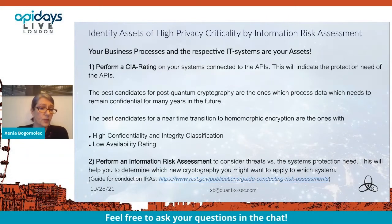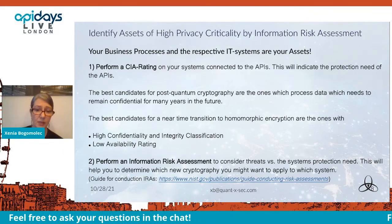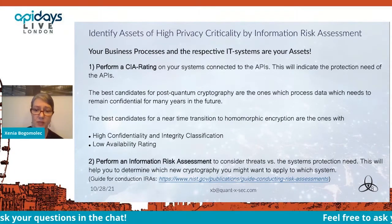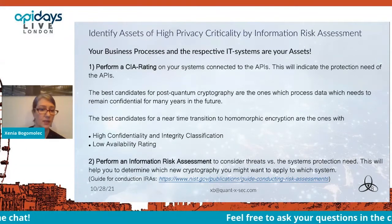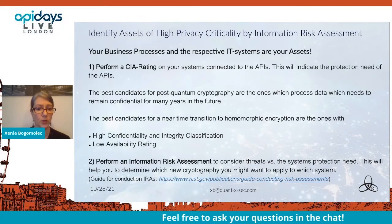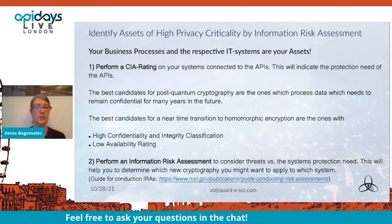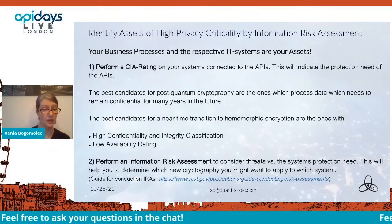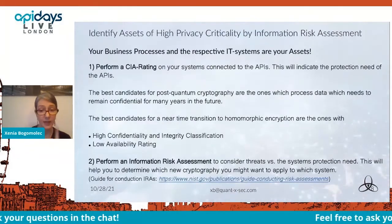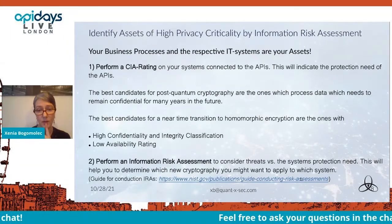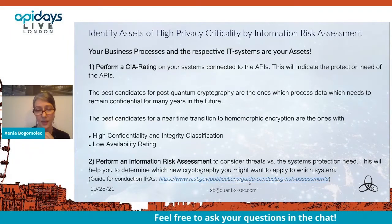The second step is to perform an information risk assessment to consider threats versus the system's protection need. This will help you determine which new cryptography you might want to apply to which system or API. NIST provides a guide on how to conduct a risk assessment, linked here.